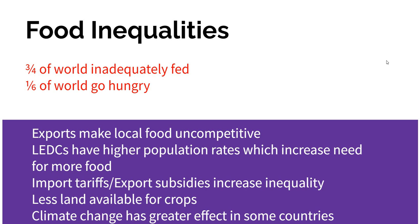If you look at the world, especially the difference between LEDCs and MEDCs, we're seeing a real inequality with food production systems. In the United States, we have an incredible food production system — 1% of the population can easily produce more than enough food for the 336 million people here, so we can easily export. Some countries rely on food exportation as a cash crop, so even though they're producing lots of food, it doesn't get used by the local population because they need it to generate income for their economies.